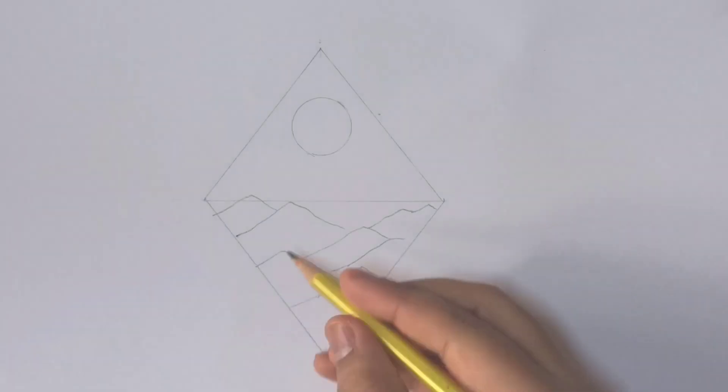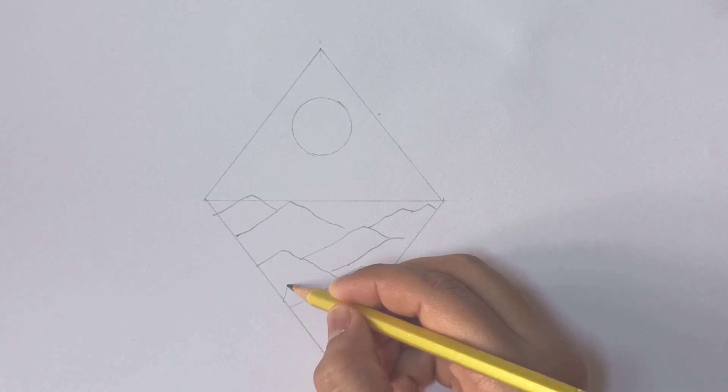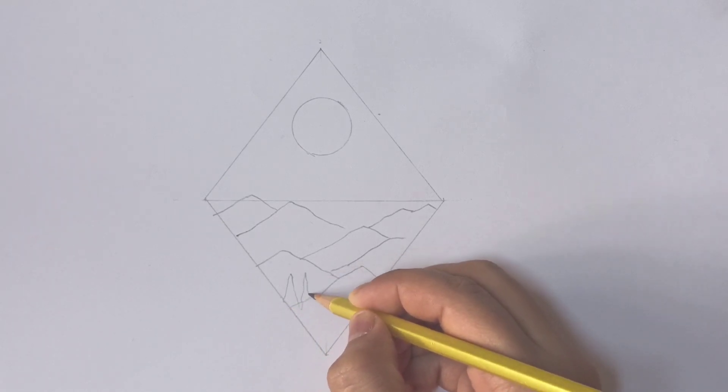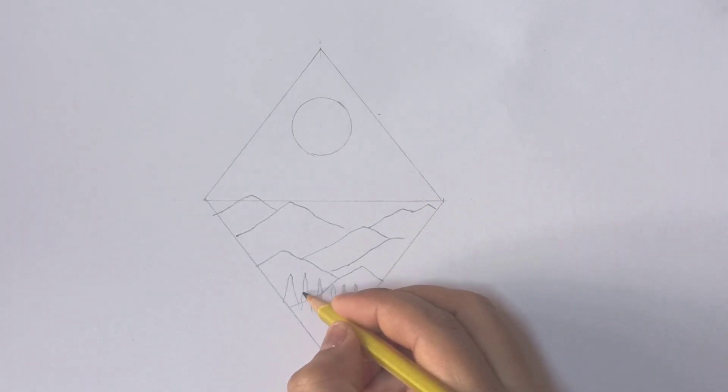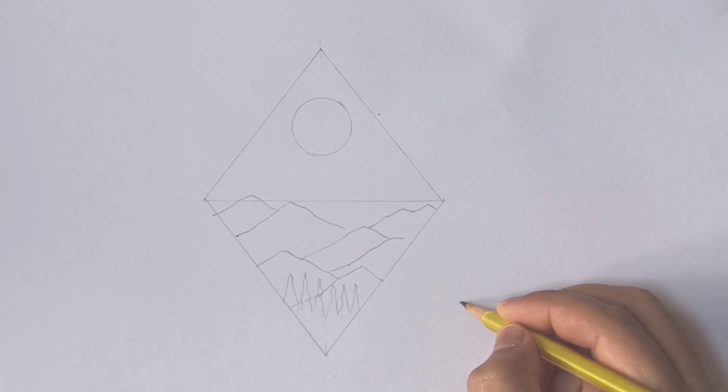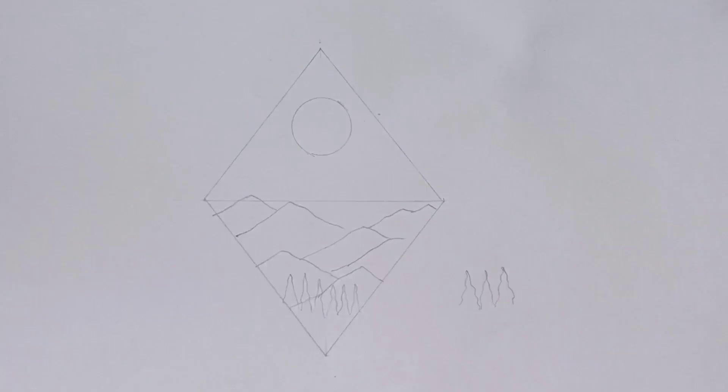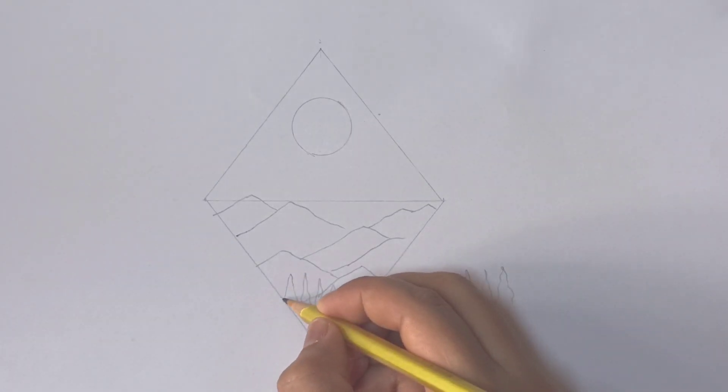So here we are going to draw trees. Draw triangular shapes with wavy lines. Just be wavy while drawing triangular shape. That's what works here.